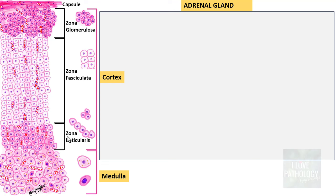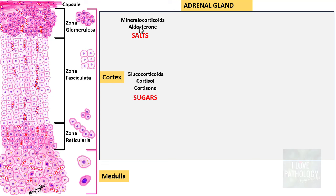Now let's look at the functions of the Adrenal Gland. The cells of the Zona Glomerulosa secrete mineralocorticoids — the most important hormone is Aldosterone, whose main function is regulation of blood pressure and water balance. Remember 'salts' for Aldosterone. The second zone, Zona Fasiculata, secretes glucocorticoids — the most important ones are Cortisol and Cortisone, which stimulate protein, fat, and carbohydrate metabolism. Remember 'sugars' for glucocorticoids.